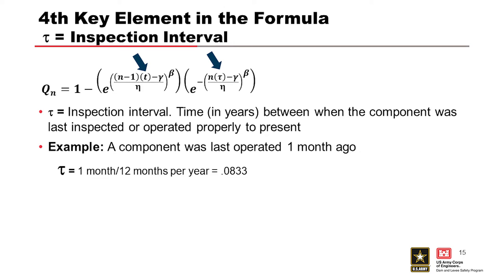And then the fourth key element in that dormant Weibull formula is the inspection interval. That's tau. It's time in years between when the component was last inspected or operated properly to present. We call it an inspection interval, but if it's operated, we typically say that that is the same as an inspection. So, it's inspection operation slash exercise interval.